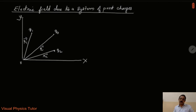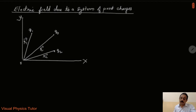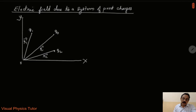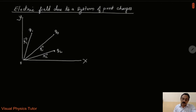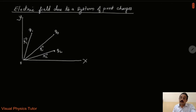So here q naught is the test charge. Since the test charge is vanishingly small, it will experience a force both due to charge q1 and charge q2. The electric field gives the force. So we have to find the electric field on q naught due to q1, and the electric field on q naught due to q2. Then we have to calculate the net electric field acting on q naught because of both the electric field E1 produced by q1 and electric field E2 produced by q2.